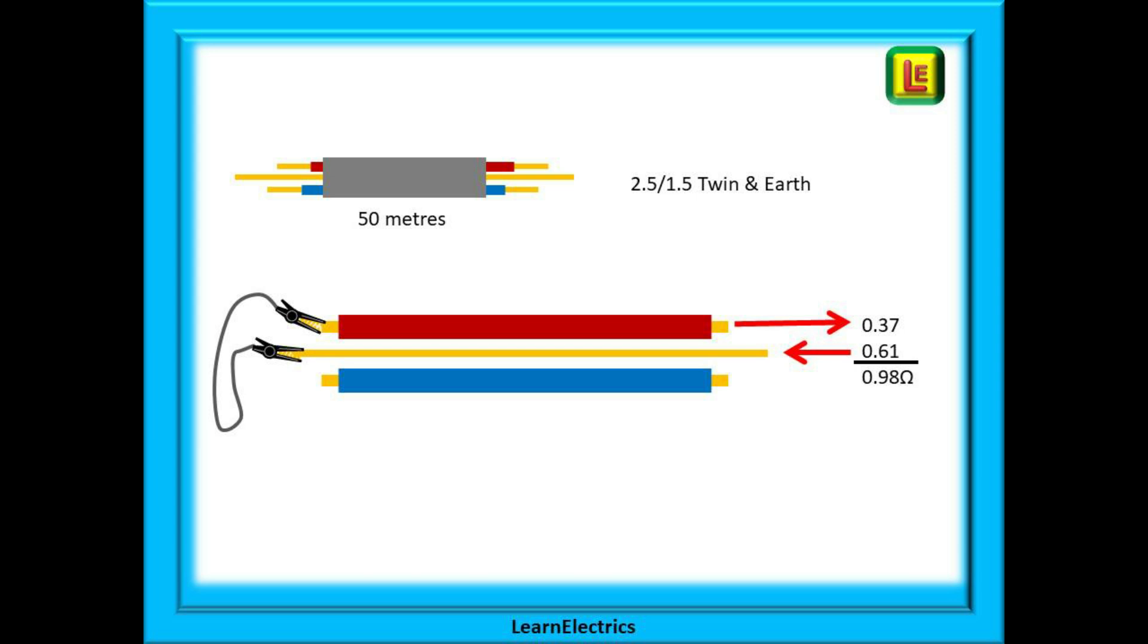We have just tested 50 meters of one millimeter copper connected to 50 meters of 2.5 millimeter copper, and the numbers for each are shown here. 0.61 ohms plus 0.37 ohms will give us a combined resistance of 0.98 ohms for this cable.